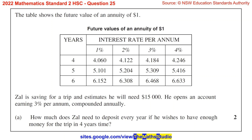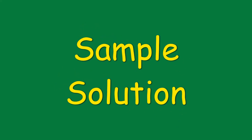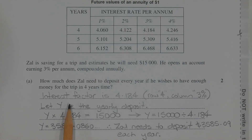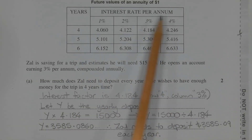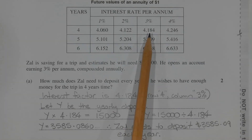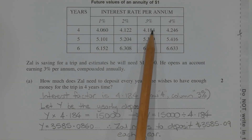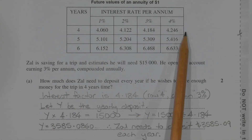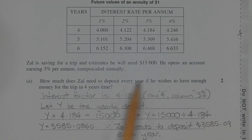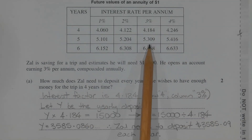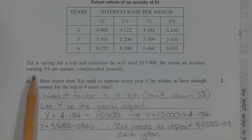Part A. How much does Zal need to deposit each year if he wishes to have enough money for the trip in 4 years time? The first step is to choose the correct interest factor from the future values table. In this case the correct interest factor is 4.184, which is this cell here. This comes from row 4 years, and column 3% per annum, compounded annually.